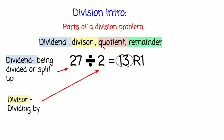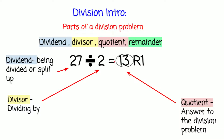And then we have quotient. The quotient is the answer we get when we're done with the process of dividing the dividend. We get an answer: 13. So 13 is considered the quotient — the answer to the division problem. The remainder is also considered part of the answer, but it's mostly the 13. And that is our quotient.